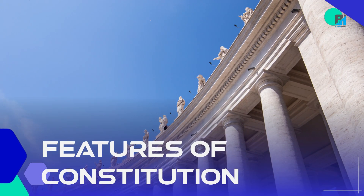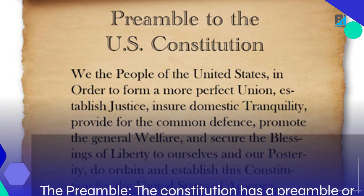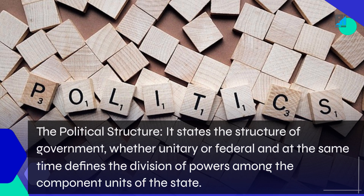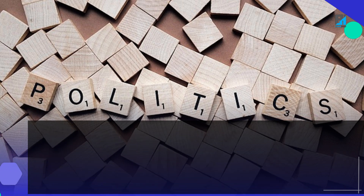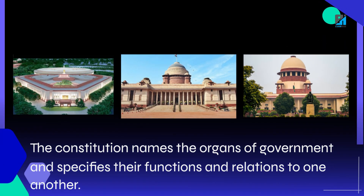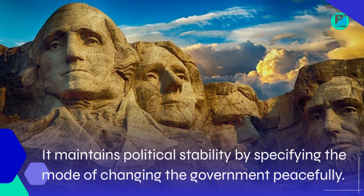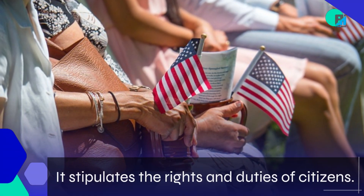Features of Constitution. The preamble: The constitution has a preamble or an introduction which states the ideological stand of the constitution. The political structure: It states the structure of government, whether unitary or federal, and defines the division of powers among the component units of the state. The constitution names the organs of government and specifies their functions and relations to one another. It maintains political stability by specifying the mode of changing the government peacefully, and it stipulates the rights and duties of citizens.